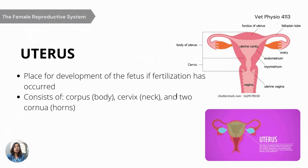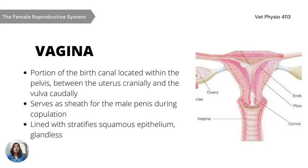The vagina is a portion of the birth canal located within the pelvis, between the uterus cranially and the vulva caudally. It serves as a sheath for the male penis during copulation. It is also lined with stratified squamous epithelium and is glandless. It has a space formed by a cranial tubular projection of the cervix into the vagina, which is called the fornix. Note that it is only visible dorsally in some animals or completely encircles the cervix. The fornix is absent in pigs.